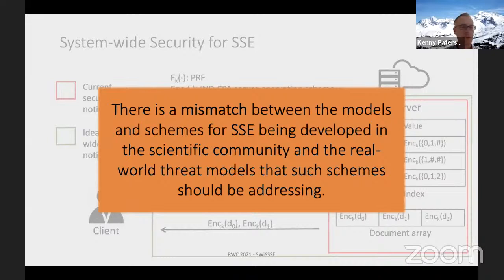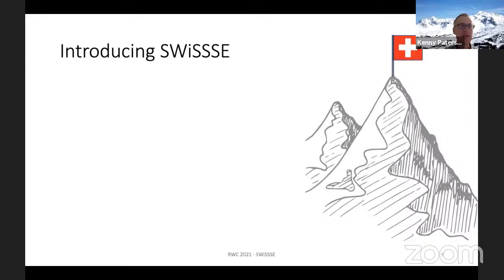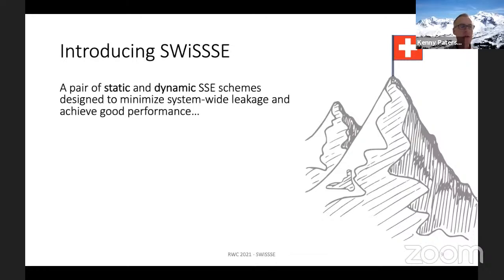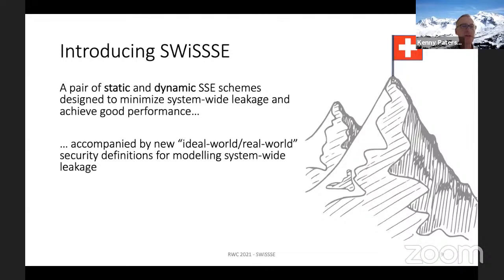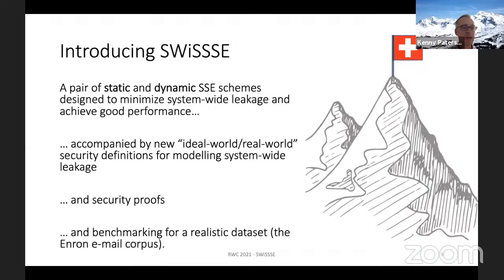SWISS is our attempt to close this gap. We provide a pair of schemes — a static scheme and a dynamic scheme, where the dynamic scheme allows insertion and deletion queries as well as searches. SWISS schemes are designed to minimize system-wide leakage while achieving good performance. We provide broader, stronger security definitions modeling system-wide leakage in an ideal-world/real-world style, identifying leakage functions similar to existing SSE work. We also provide security proofs for the SWISS schemes.